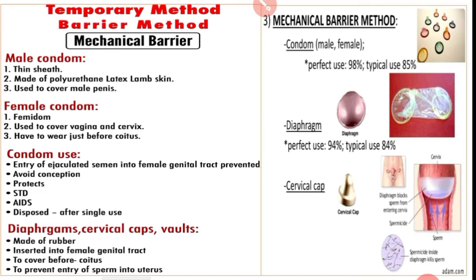These devices can be self-inserted by the user in complete privacy. The common barrier methods are condom, diaphragm, cervical cap, femi shields, and vault. They are mechanical devices which prevent the deposition of sperm into the vagina and their passage into the uterus.